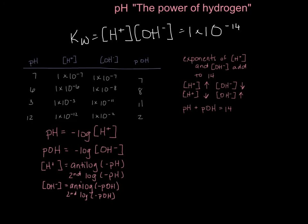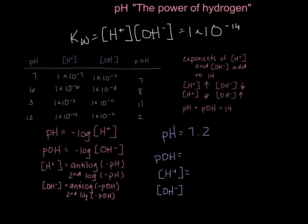Let's look at an example. If I have something with a pH of 7.2 and I want to find my pOH, the concentration of my H⁺, and the concentration of my OH⁻ — that's when all this anti-log, log, and our water constant come in handy. We can start with the easy stuff. Our pOH: remember, pH plus pOH must equal 14, so 14 minus 7.2 equals 6.8. So my pOH is equal to 6.8.